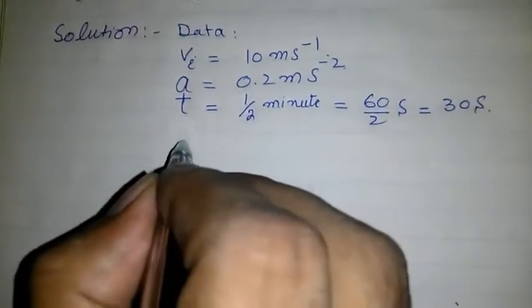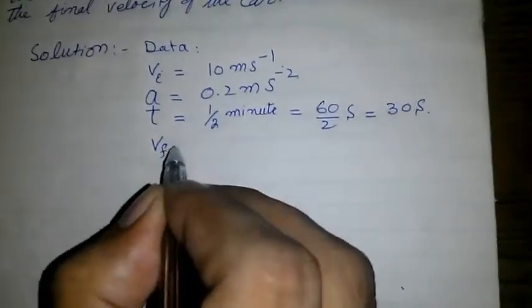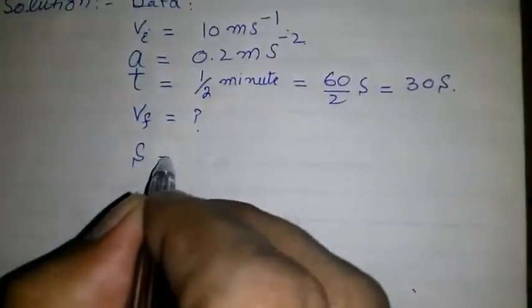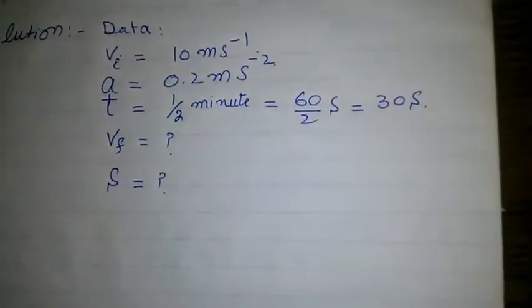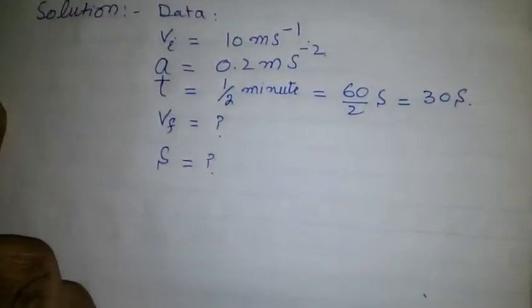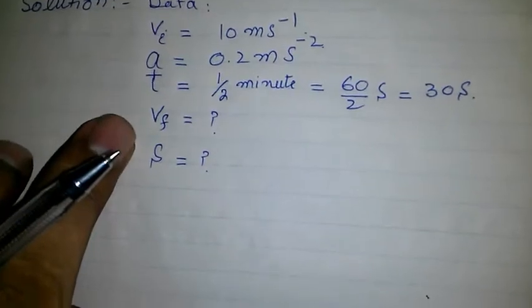And we have to find its final velocity and distance traveled during this time. First of all we use the first equation of motion and find the final velocity.